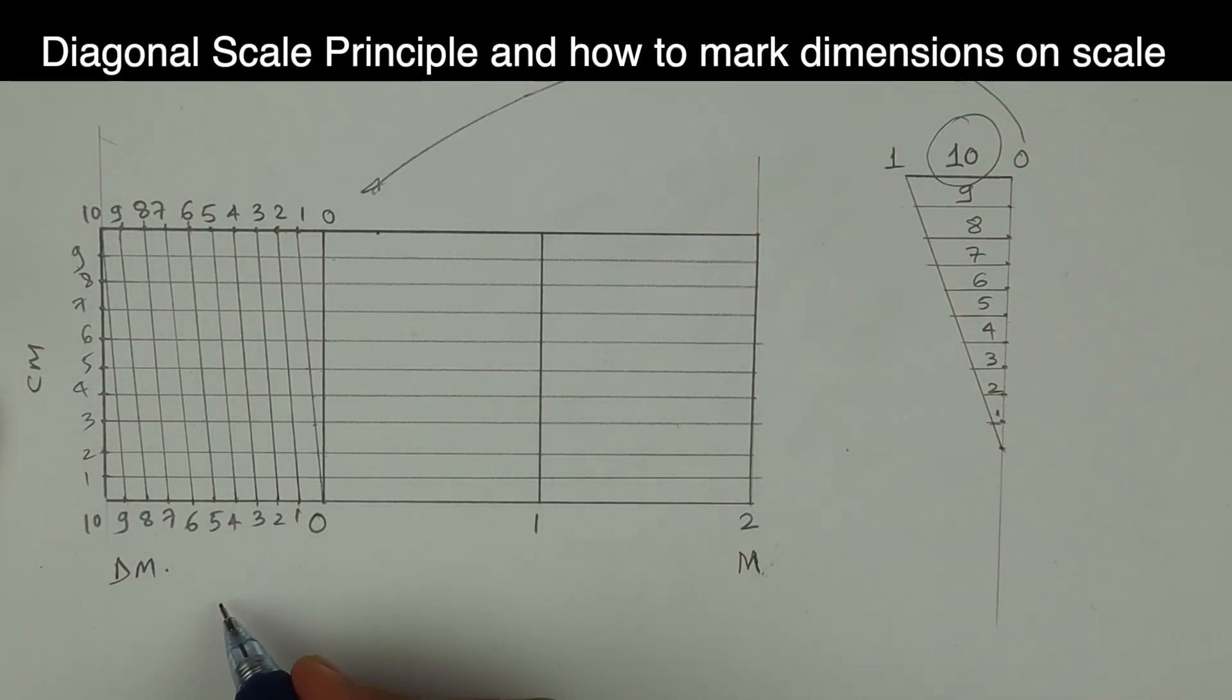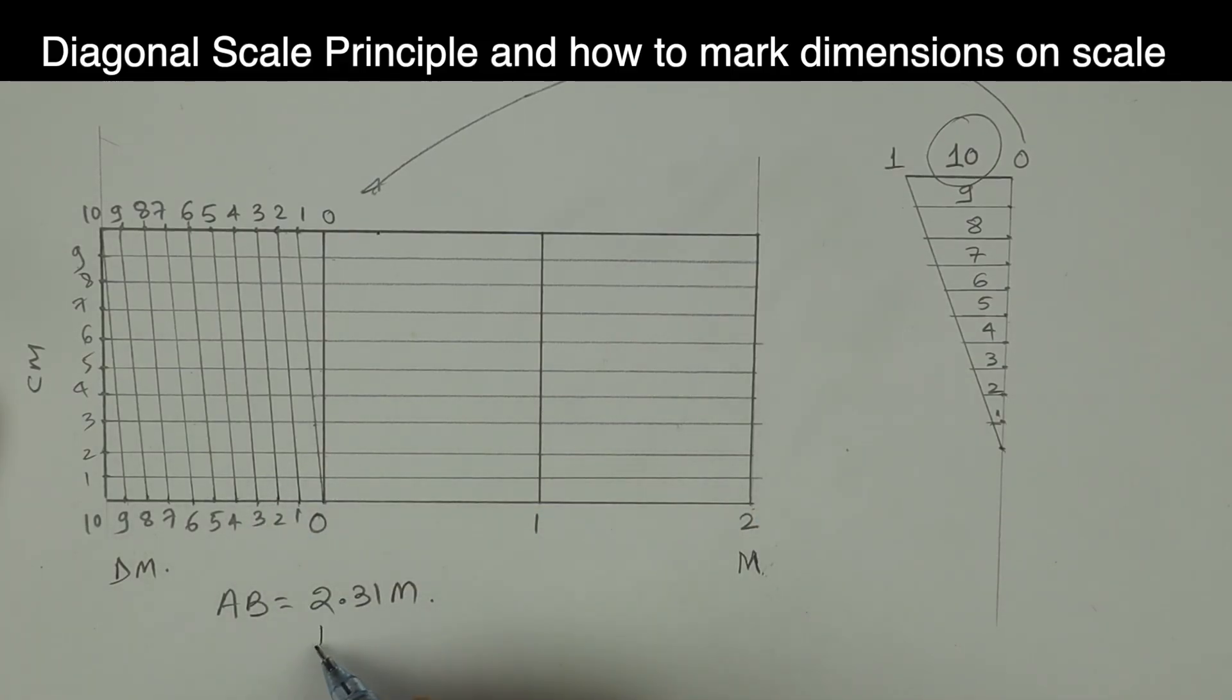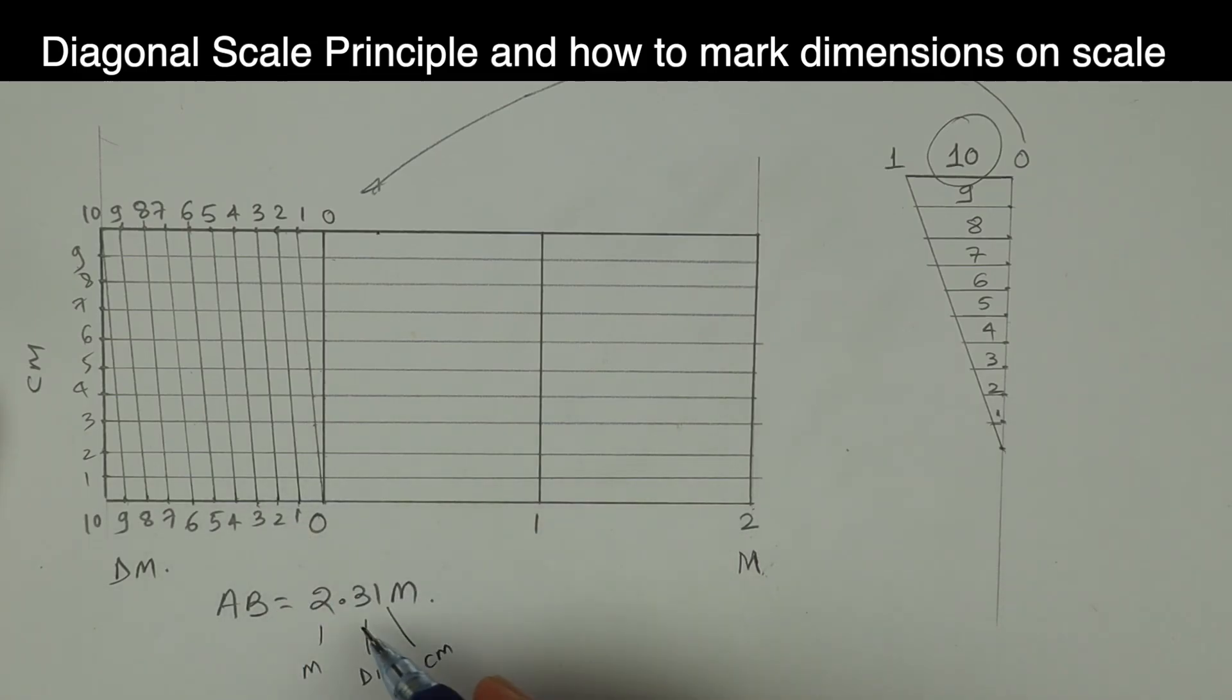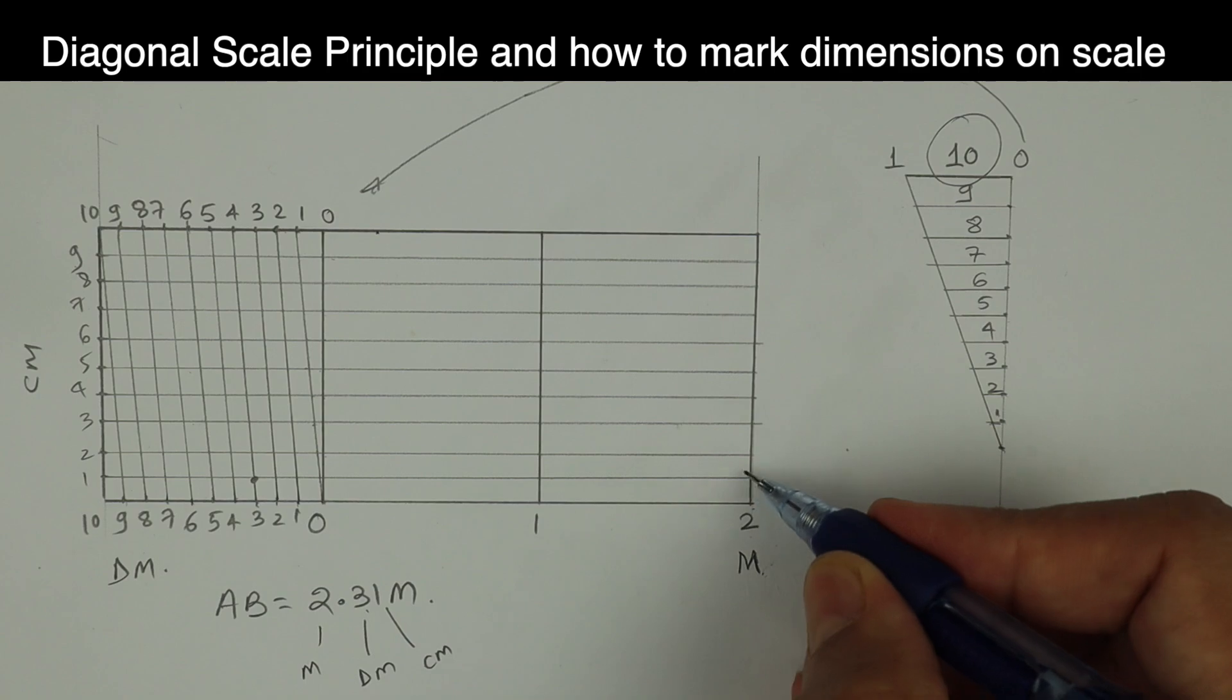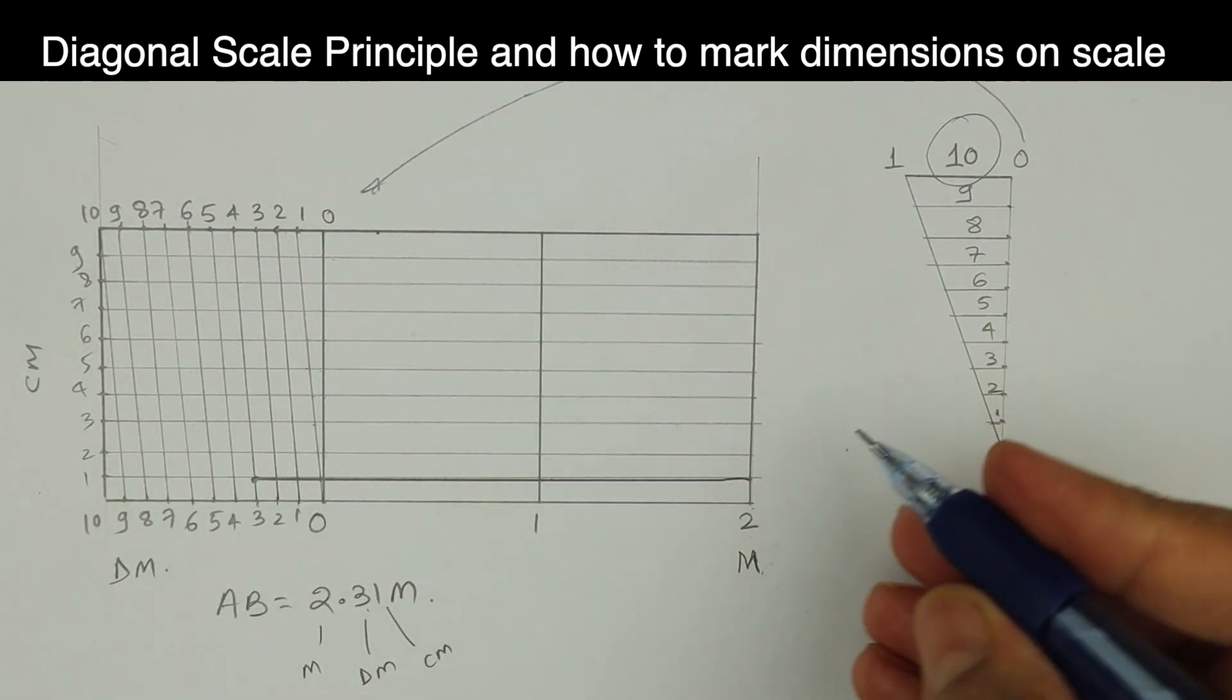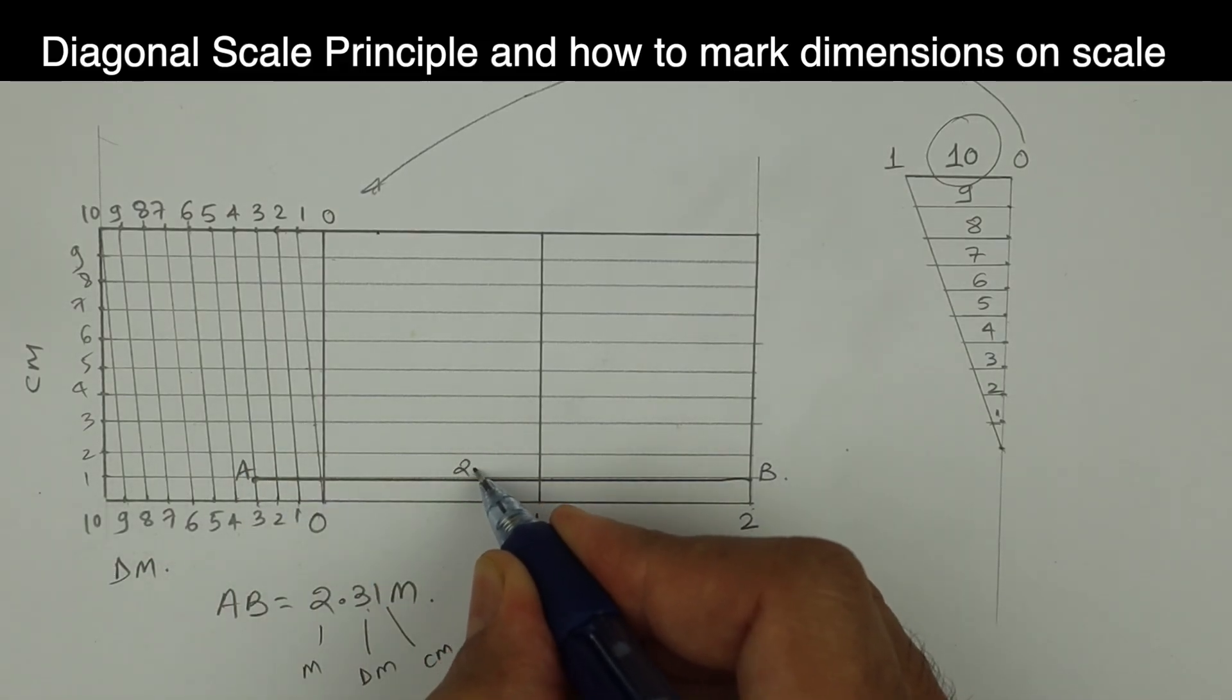See this. Let's say if you want to mark AB, 2.31 meter. So 2 meter, 3 decimeter and 1 centimeter. See this. 2.31. Right? It will be here. So this is 2.31, AB. This is how you mark on diagonal scale.